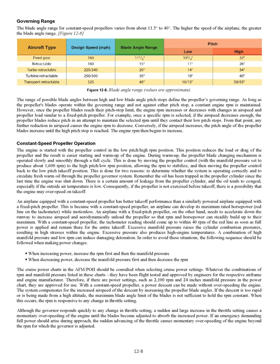Governing Range. The blade angle range for constant speed propellers varies from about 11.5 degrees to 40 degrees. The higher the speed of the airplane, the greater the blade angle range. The range of possible blade angles between high and low pitch stops defines the propeller's governing range. As long as the propeller blades operate within the governing range and not against either pitch stop, a constant engine RPM is maintained. However, once the propeller blades reach their pitch stop limit, engine RPM increases or decreases with changes in airspeed and propeller load, similar to a fixed pitch propeller. If airspeed decreases enough, propeller blades reduce pitch until they contact their low pitch stops, after which any further reduction in airspeed causes the engine RPM to decrease.